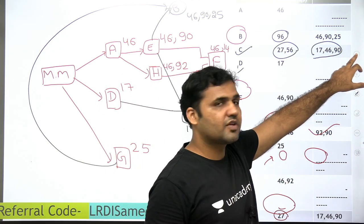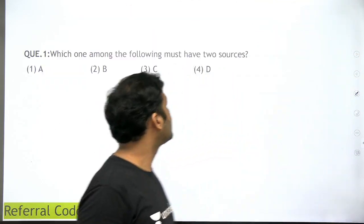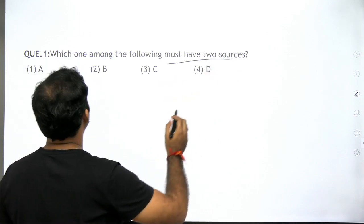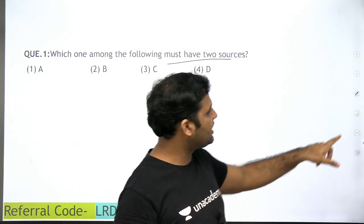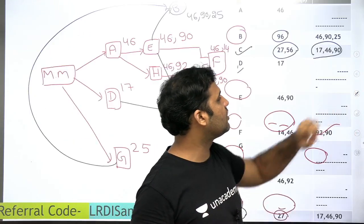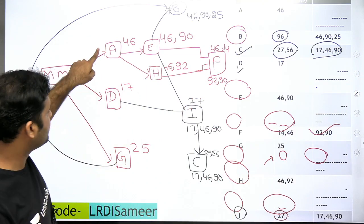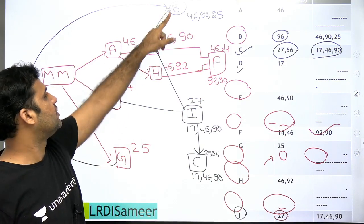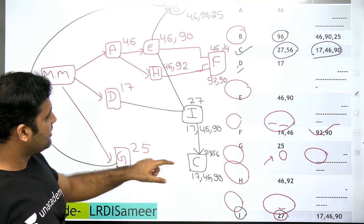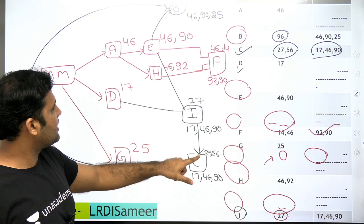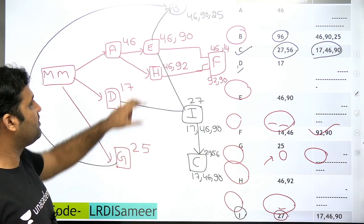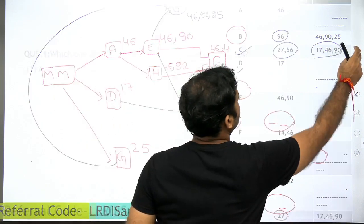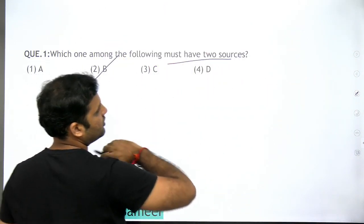There were five questions in this set. The first question is: which among the following must have two sources — A, B, C, or D? A's source is only one (mastermind). B has two sources: E and G. C has only one source: I. D has only one source: mastermind. So B is having two sources, therefore the answer to this question is option 2.